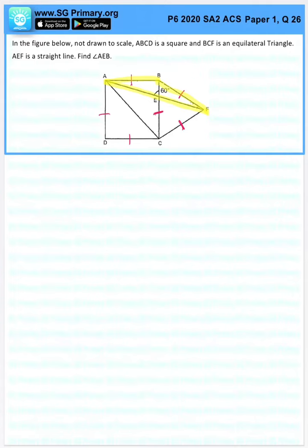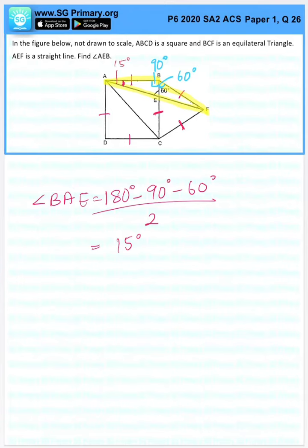Let's find angle BAE, which is here. We will take 180 degrees minus 90 minus 60 divided by 2. Because why? Here is an equilateral triangle, 60 degrees. Here is a square, which is 90 degrees, which will give us the answer of 15 degrees. So this is 15 degrees.